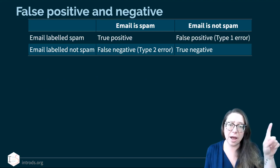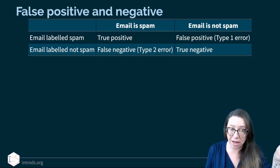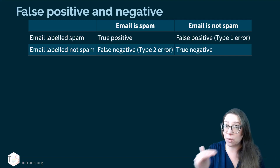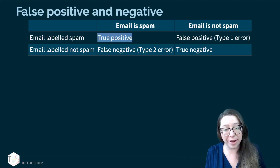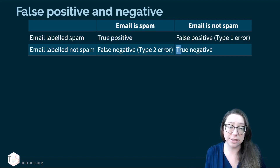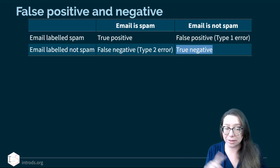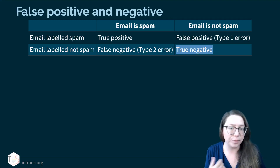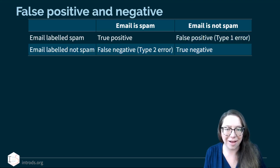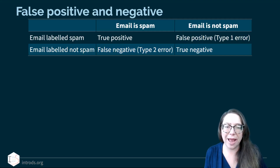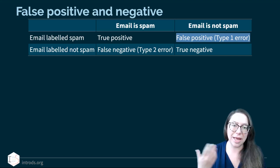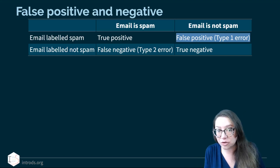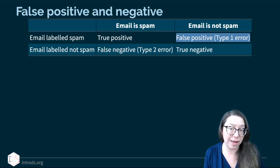At the intersection of 'email is spam' and 'labeled spam' we have a true positive. At the intersection of 'not spam' and 'labeled not spam' we have a true negative — both of those are happy outcomes. But then there are the problematic cells: an email that is not spam but was labeled spam is a false positive — that's the email someone sends you and you find it in your spam box — which is also called a type 1 error.